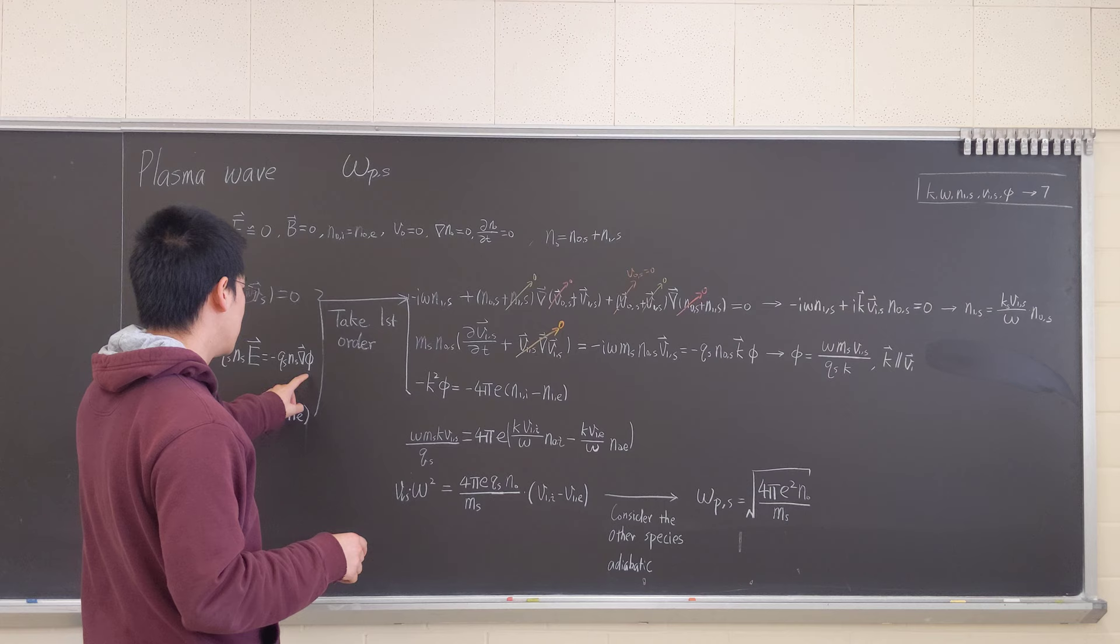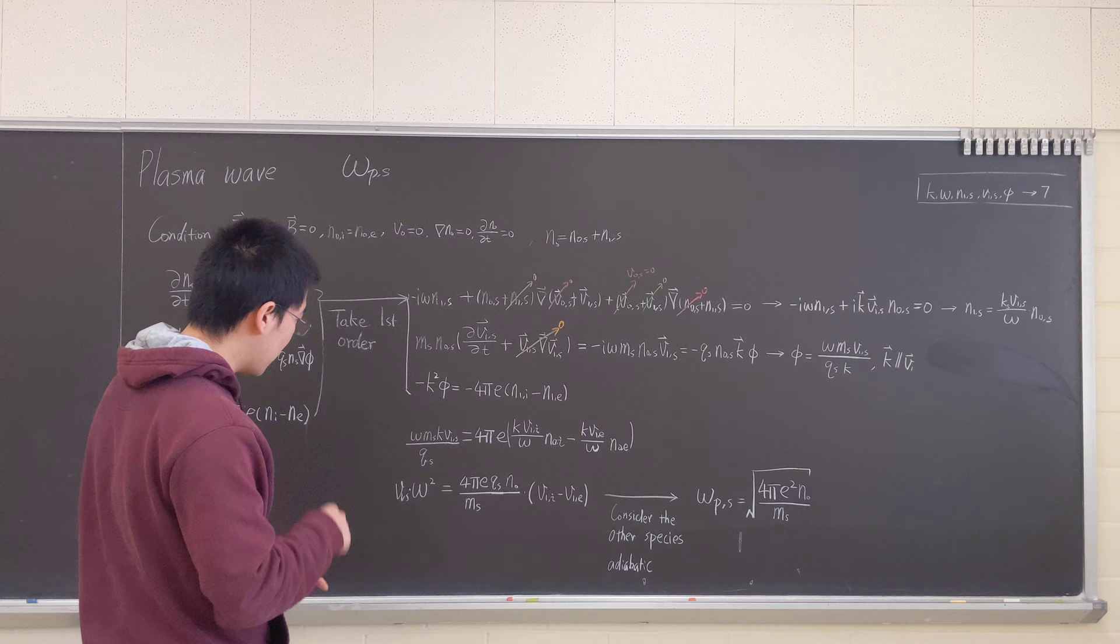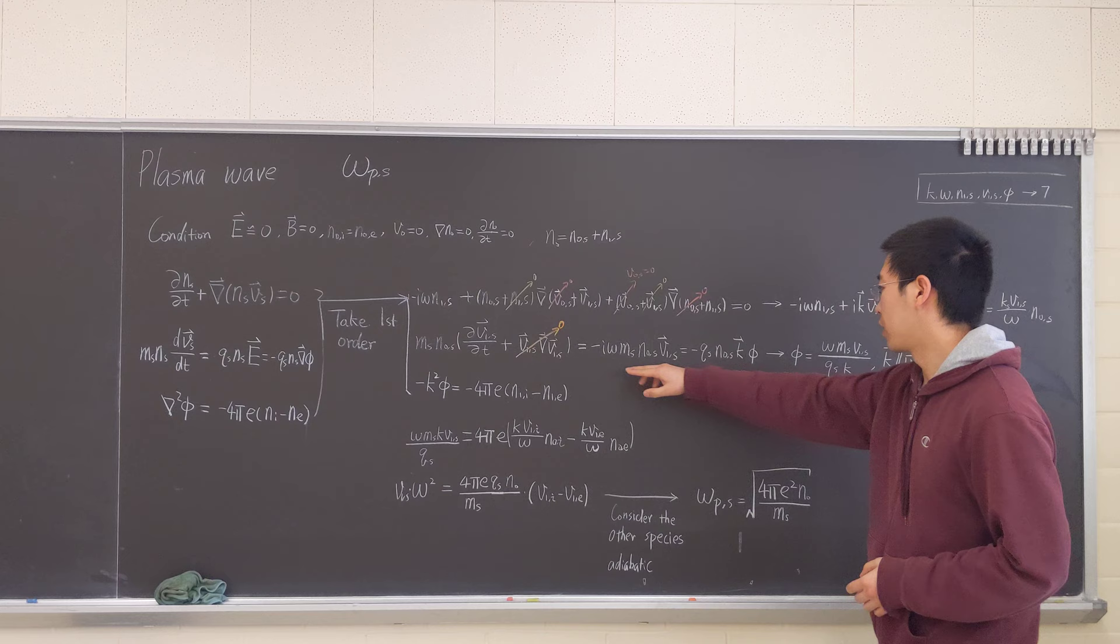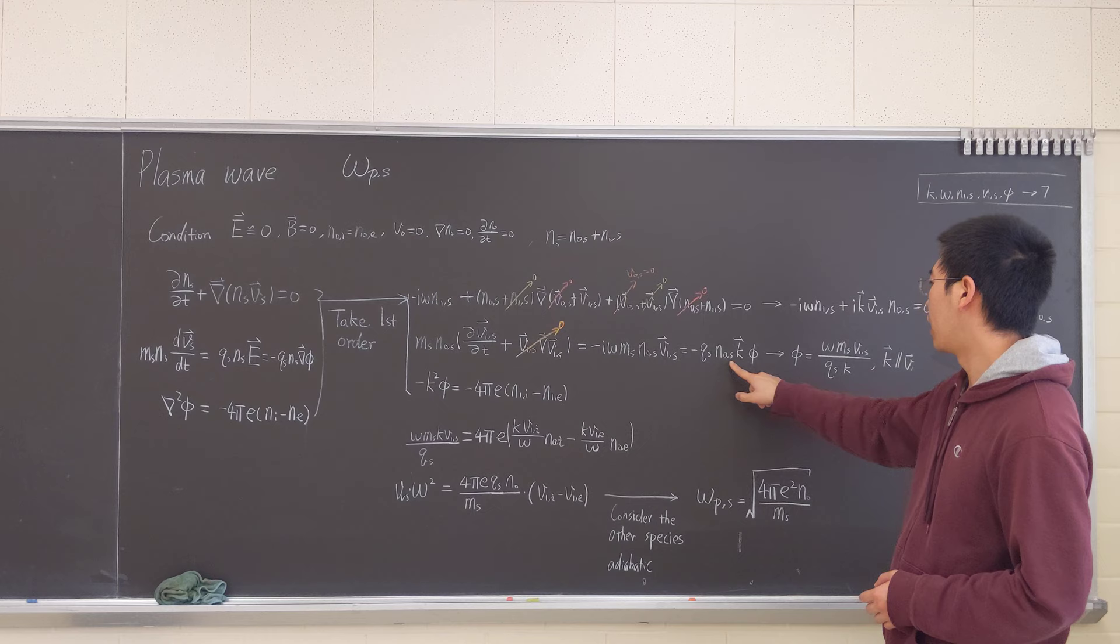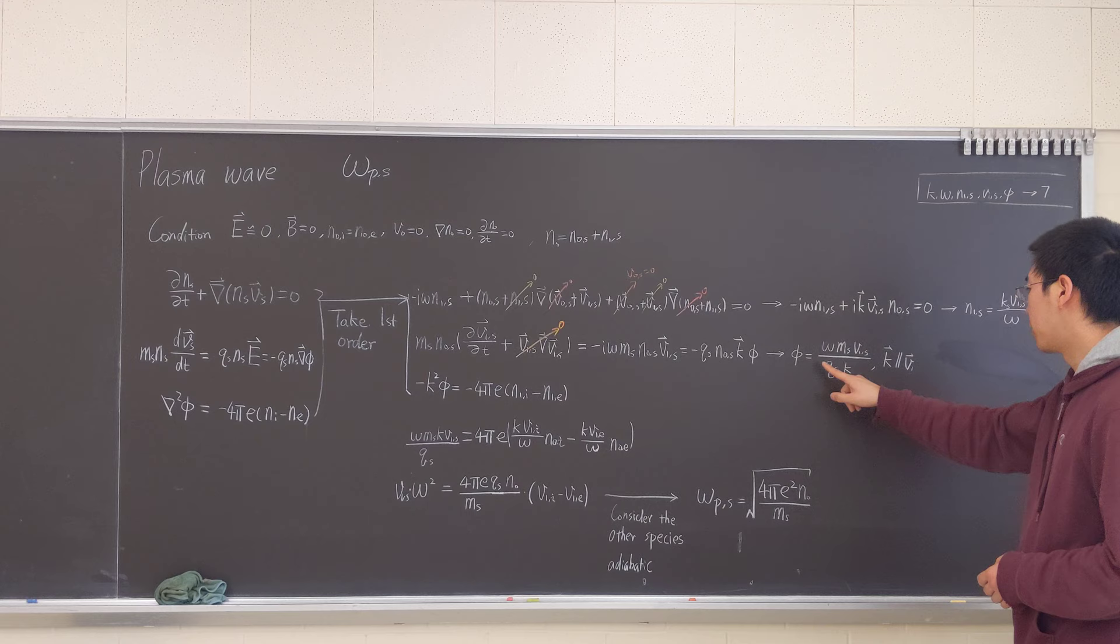We can express the electric field in terms of potential. Electrostatic potential will have E equals to negative grad phi as we know. So we want to have this expression.